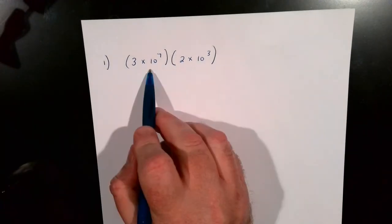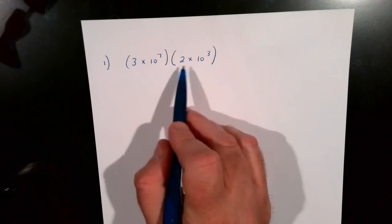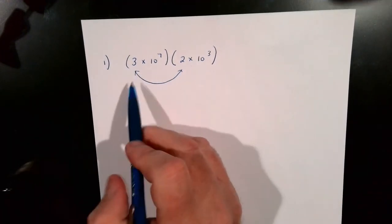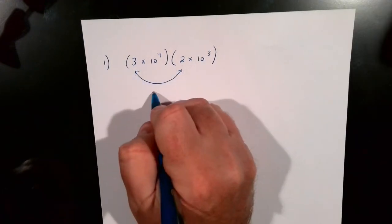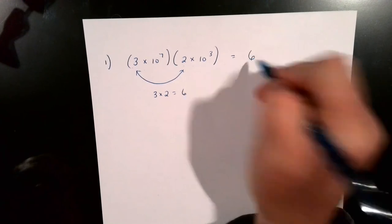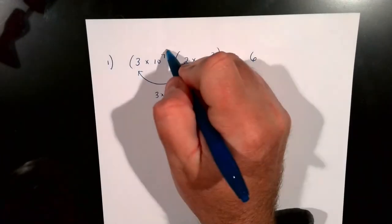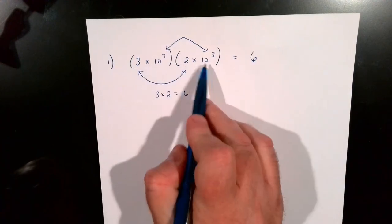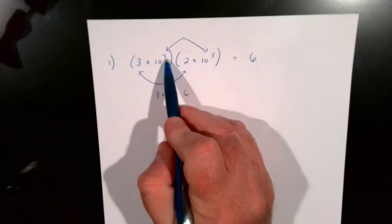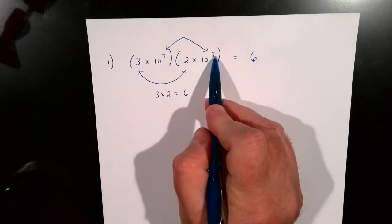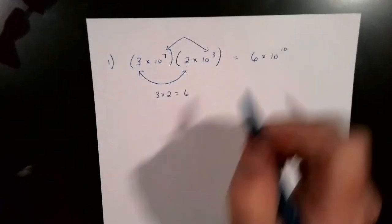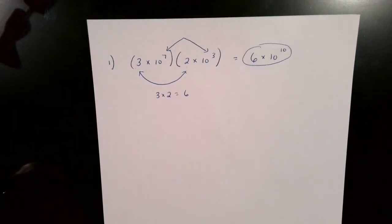So both of these are in scientific notation right now. To multiply in scientific notation, we're simply going to take the first two numbers and times those together. So 3 times 2 turns out to be 6. And then, as we learned in the previous lesson, when we're multiplying exponents, we simply just add those together. So 10 to the 7th times 10 to the 3rd — we add 7 and 3 — and we end up with 10 to the 10th. So my final answer is 6 times 10 to the 10th.